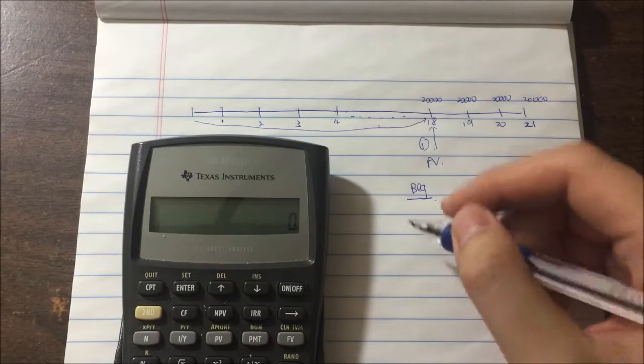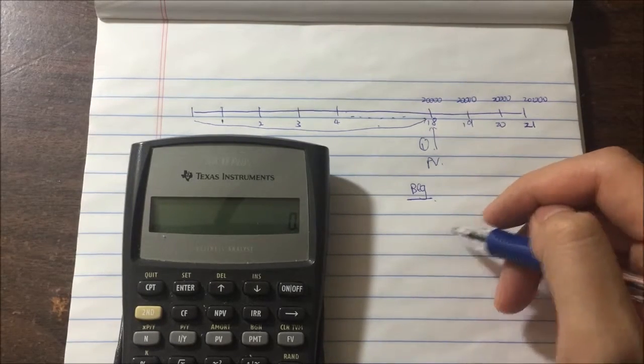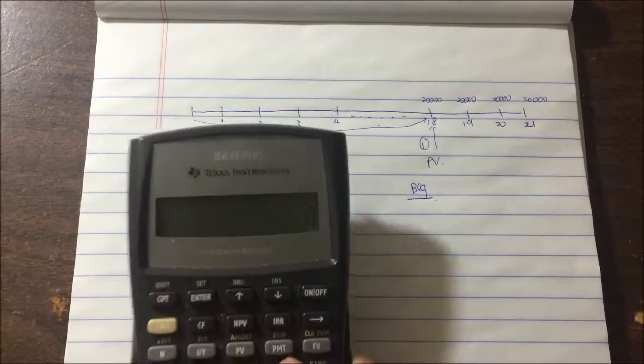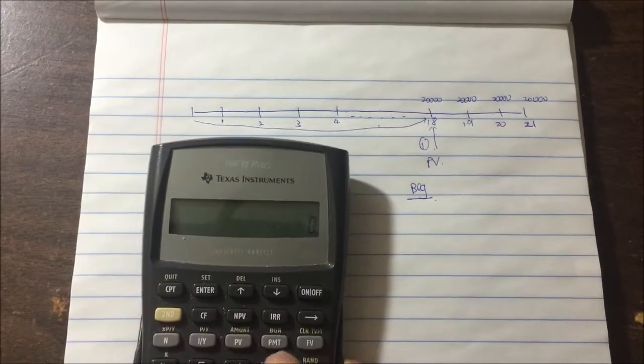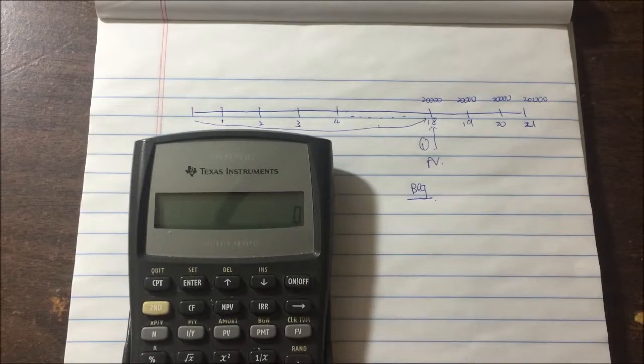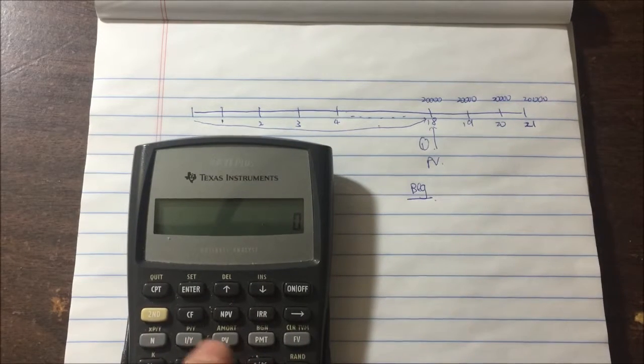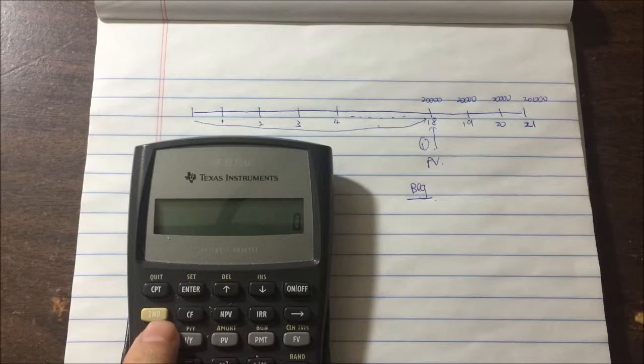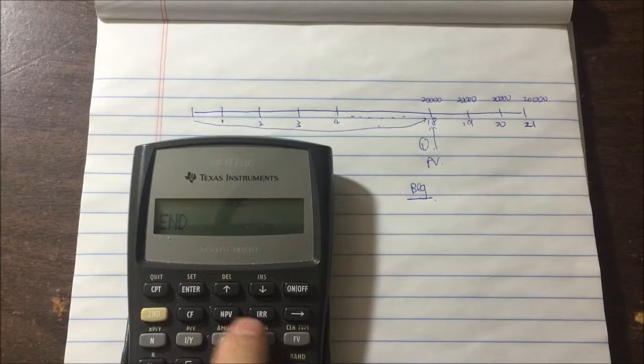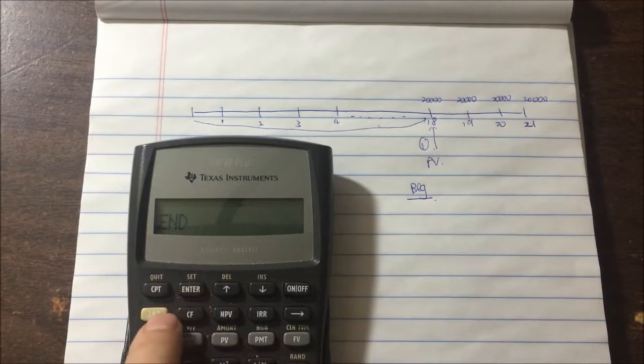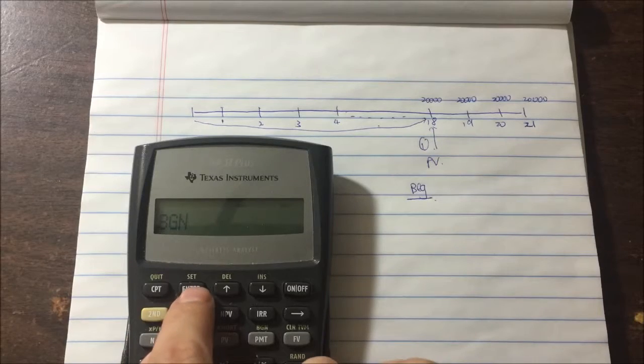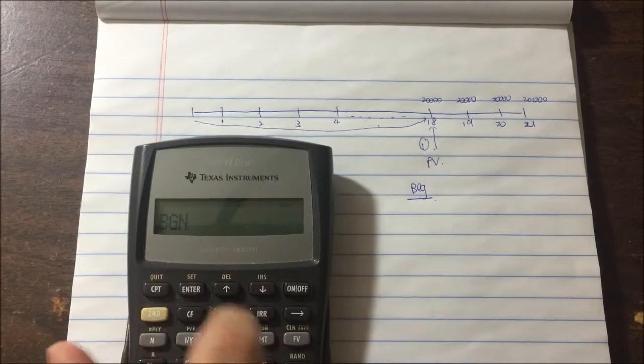You don't really need to memorize all the annuity formulas or present value formulas because this can all be done on the BA II Plus. Let's set the function to beginning of the year. On BA II Plus, we do second, beginning. Right now it's at end, so we set it to beginning by pressing second, enter.